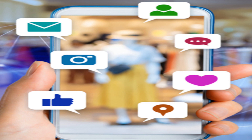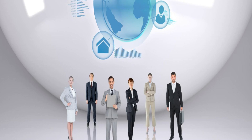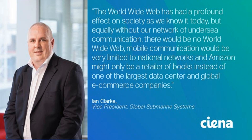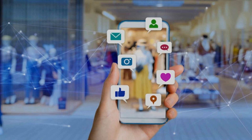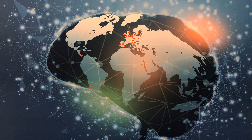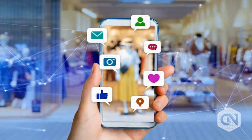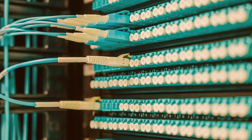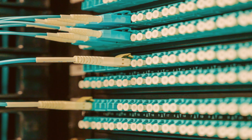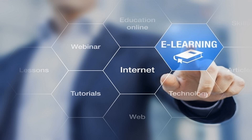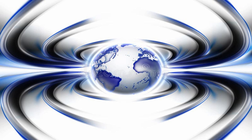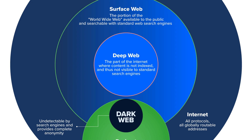The World Wide Web has had a profound impact on our society, transforming the way we live, work, and interact with one another. Perhaps one of the most significant impacts of the web is the democratization of information. Online databases, search engines, and social media platforms have made it easier than ever before to access information on virtually any topic, leading to an increase in knowledge sharing and collaboration, as well as a broader understanding of different cultures and perspectives. The web has also transformed the business world, making it easier for companies to reach new customers and conduct transactions online. E-commerce has revolutionized the way we shop and do business, enabling us to buy and sell goods and services from anywhere in the world. Additionally, the web has enabled new forms of communication, from email to messaging apps to social media, bringing people closer together.